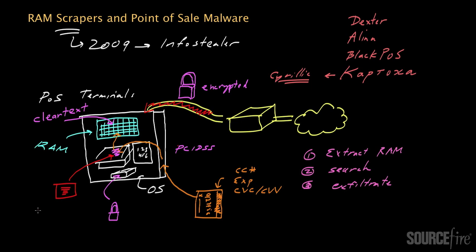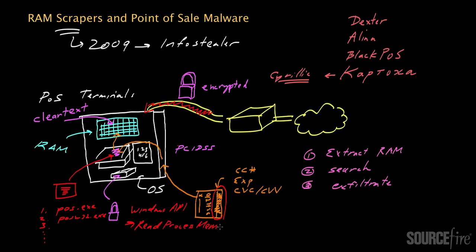There may be a number of processes running, but only a small number actually handle sensitive data. So RAM scrapers might start by enumerating the actively running processes and identifying which ones are of deeper interest. For example, many POS terminals have an application called POS.exe, and another called POSw32.exe, both of which directly process the data read from the card's magnetic strip. The RAM scraper will then examine the memory contents of those processes — one straightforward mechanism is via a Windows API called ReadProcessMemory, which places those memory contents into a buffer where they can be analyzed.